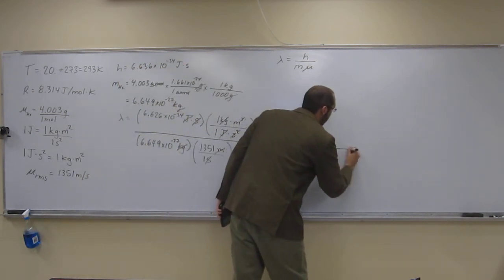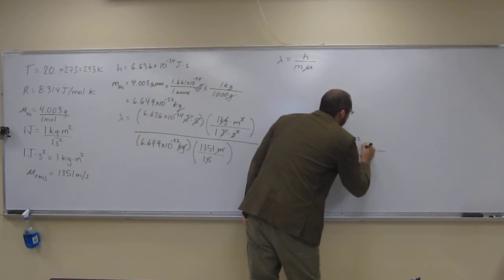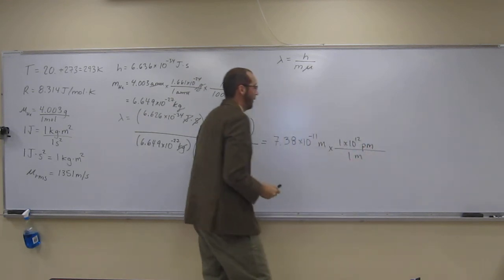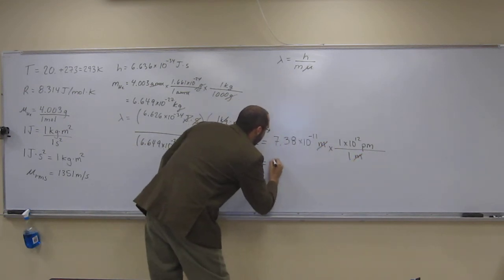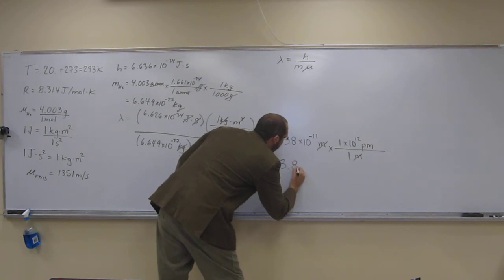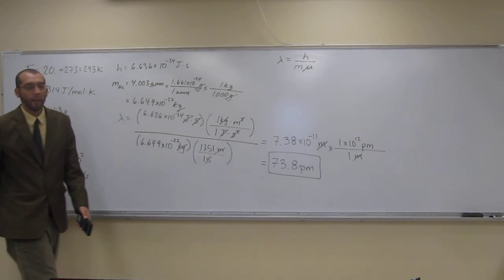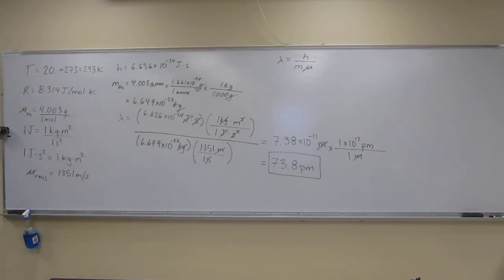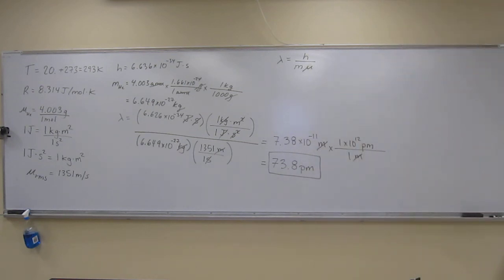Well, let's convert this to picometers. So, for every 1 meter, you have 1 times 10 to the 12th picometers, like that. So, cancel, cancel, and that's gonna turn this into 73.8 picometers. So, that's the wavelength of the helium atom at the root mean squared speed, that it would be at 20 degrees Celsius. Are there any questions about that one? No.